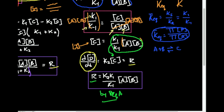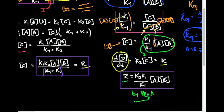Let's get both rate expressions on the same screen. The pre-equilibrium approximation gave: rate = k2 · (k1/k-minus-1) · [A][B]. The steady state approximation gave: rate = k1·k2·[A][B] / (k-minus-1 + k2). Notice the important difference: in the steady state denominator we have k-minus-1 plus k2, but in the pre-equilibrium denominator we only have k-minus-1 — there's no plus k2. This is a really important thing to notice.